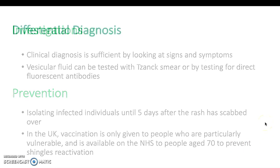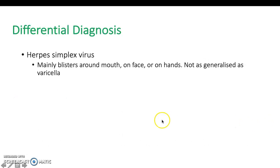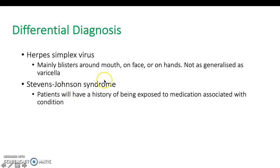Differentials to be aware of: herpes simplex virus presents mainly with blisters, more focal around the mouth, face, or hands — not as generalised over the torso as varicella. Stevens-Johnson syndrome is quite rare but presents with a similar rash; patients will have a history of exposure to associated medications such as lamotrigine, carbamazepine, allopurinol, or sulfonamide antibiotics, or underlying infections such as cytomegalovirus, HIV, AIDS, or SLE — essentially if they are immunocompromised.